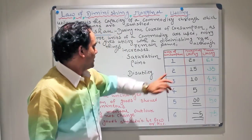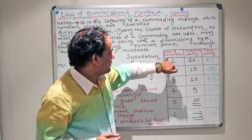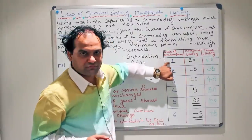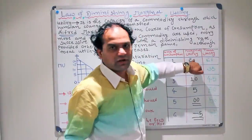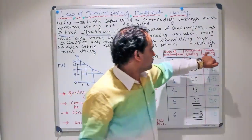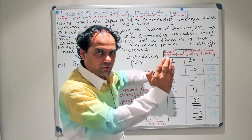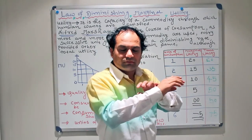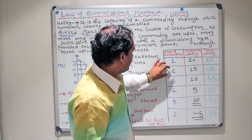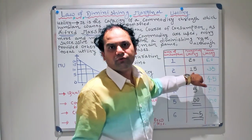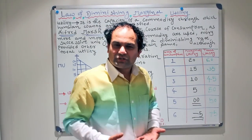Looking at this chart: the first unit of consumption — the first glass of milk after you came home after six hours — gives you a marginal utility of 20, so the total utility is also 20. Once you have consumed the first glass of milk, you pour yourself a second glass of chilled milk, and the second glass is going to give you 15 units of marginal utility.